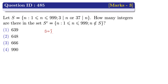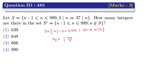It is given that the set S contains elements n such that 1 ≤ n ≤ 999 and 3 divides n or 37 divides n. This implies the total number of elements is 999. Now, first we have to find the number of elements divisible by 3, which is equal to the greatest integer of 999 divided by 3, which equals 333.